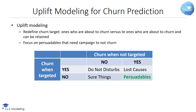The persuadables are the ones that need the campaign to prevent them from churning. These are the ones we should actually target with our campaign.